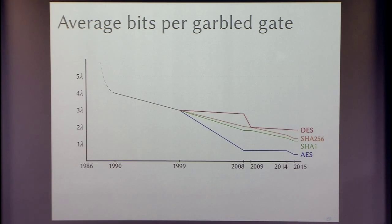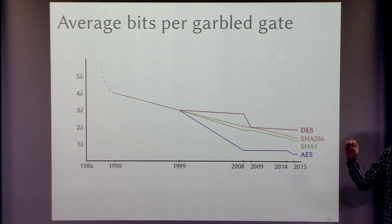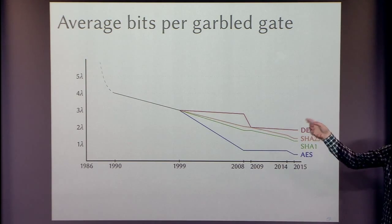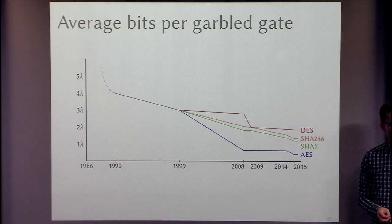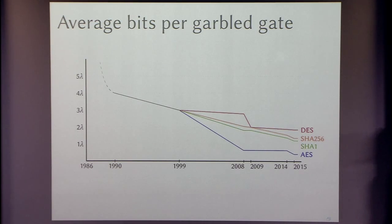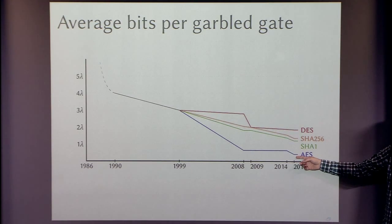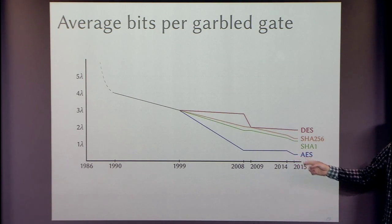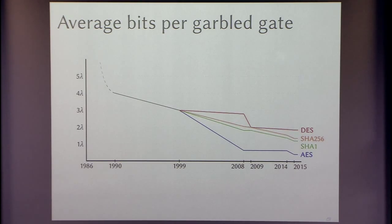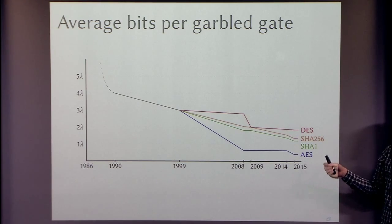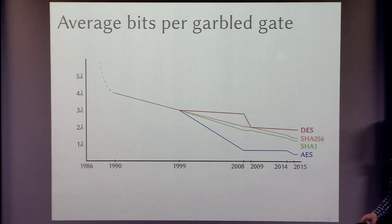This graph tells the story I want to tell. It shows the average number of bits per gate needed to garble different circuits. To garble the AES circuit back in 1990, it took four times the security parameter per gate. Now the cost is about 0.4 times the security parameter — the average number of bits needed per gate in the AES circuit. I want to tell the story of how we got from where no one knew anything to the current state of the art.